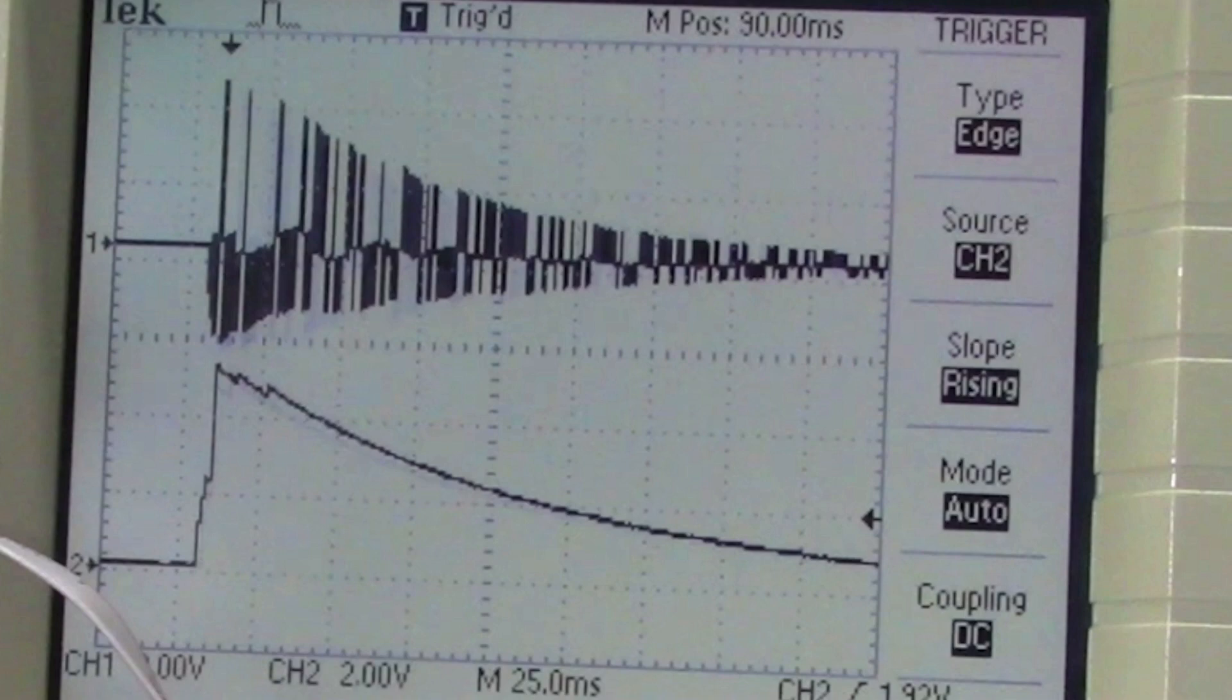For those of you that don't know what it does, an envelope follower takes an AC signal and creates a positive signal that tracks along with it, smoothing out all the individual peaks and valleys.